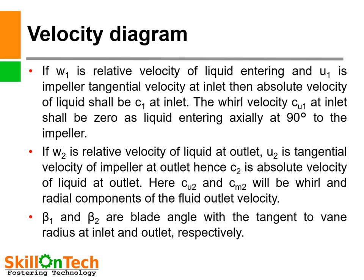We have seen the velocity diagram. If W1 is relative velocity of liquid entering and U1 is impeller tangential velocity at inlet, then absolute velocity of liquid shall be C1 at inlet. The whirl velocity Cu1 at inlet shall be 0 as liquid enters axially at 90 degrees to the impeller. If W2 is relative velocity of liquid at outlet and U2 is tangential velocity of impeller at outlet, then C2 is absolute velocity of liquid at outlet. Cu2 and Cm2 are the whirl and radial components of fluid outlet velocity. β1 and β2 are blade angles with the tangent to vane radius at inlet and outlet respectively.